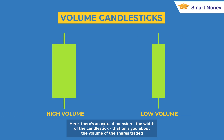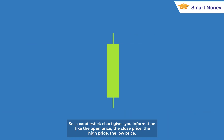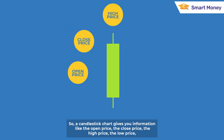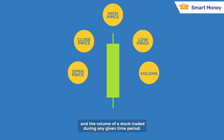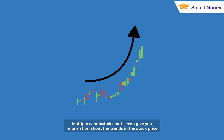There are volume candlesticks as well — here there's an extra dimension, the width of the candlestick, that tells you about the volume of shares traded. So a candlestick chart gives you information like the open price, the close price, the high price, the low price, and the volume of the stock traded during any given time period.